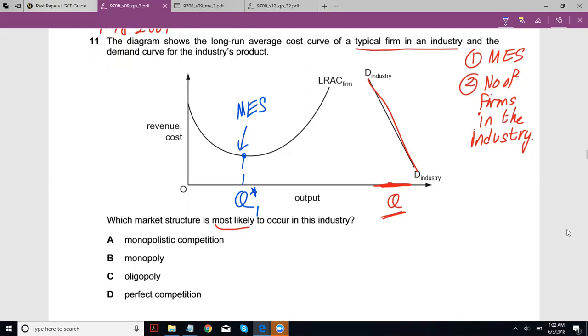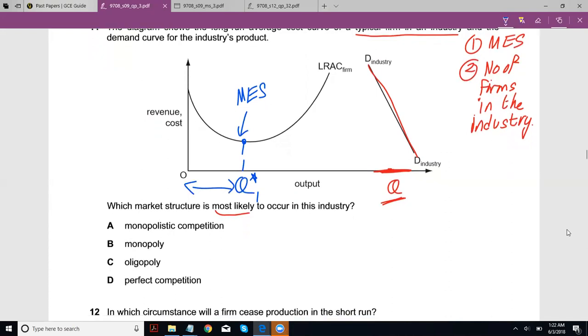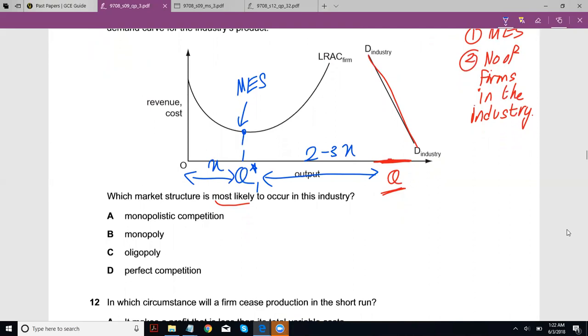If you quickly look from the diagram, if we call this distance X, this distance would be roughly maybe 2.5X, maybe 3X, maybe 2X. So 2 to 3 times of X, just a rough estimate looking at the diagram. Which means that if one firm can produce this much quantity and you need this much quantity to satisfy the demand of the industry, you would need around four to five firms. Approximately three to five firms would be a better estimate.